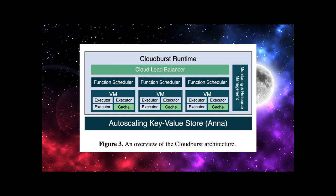User requests are received by a scheduler which routes them to the function executors. Each scheduler operates independently, and the system relies on a standard stateless cloud load balancer. The function executors run in individual processes packed into VMs, along with a local cache per VM. The cache intermediates between the local executors and the remote key-value stores.